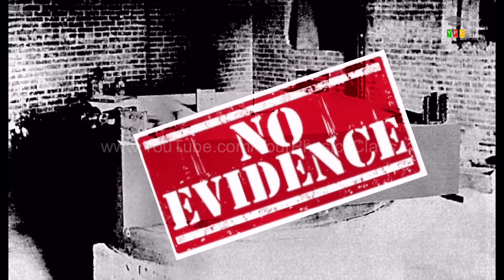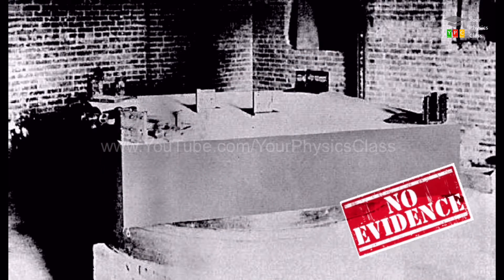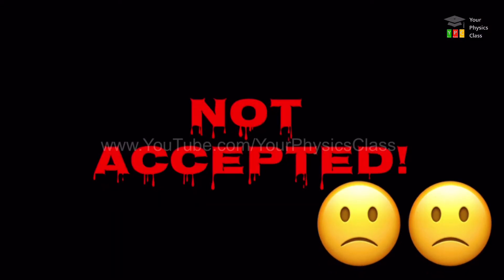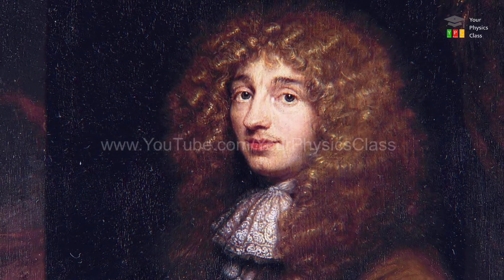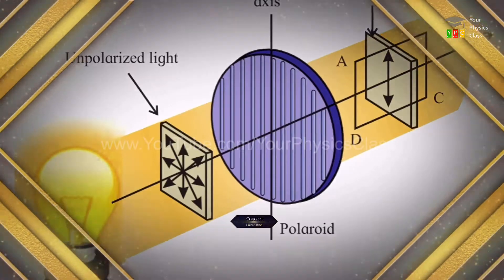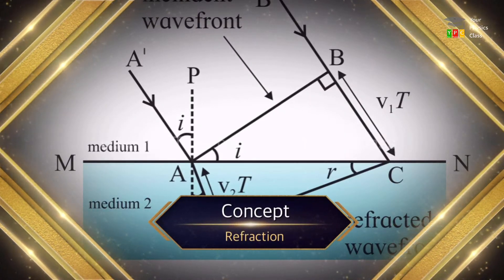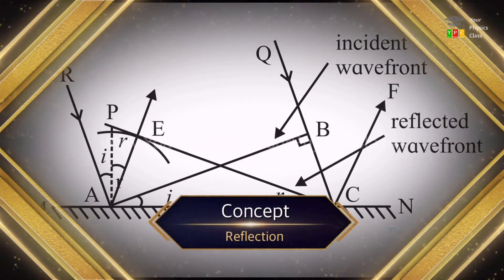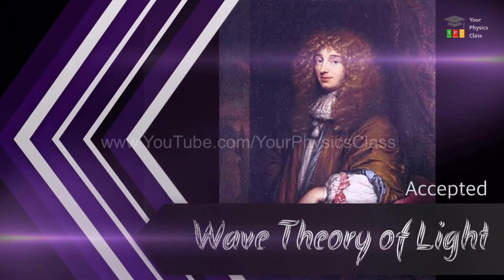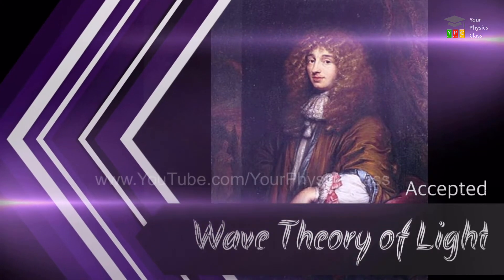There was however no evidence to prove its existence, and thus it was difficult to accept the concept. The Huygens wave theory of light could explain interference, polarization, diffraction, and all light phenomena of that time. Hence, the theory was accepted as correct theory of light.